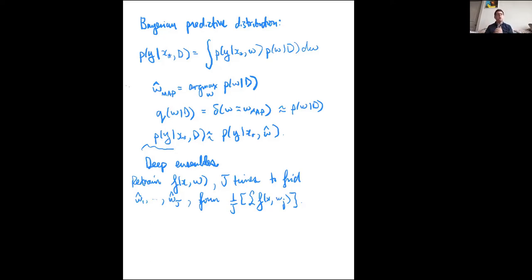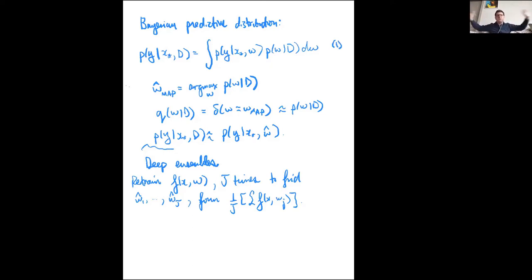The common takeaway was that maybe something is really going wrong with Bayesian methods in deep learning — this simple heuristic seems to significantly outperform canonical approaches to approximate Bayesian inference. People asked, why don't we just have a workshop about ensembling and forget about Bayesian methods? But if we think about this mathematically as an integration problem, something like deep ensembles actually seems like a reasonable heuristic.